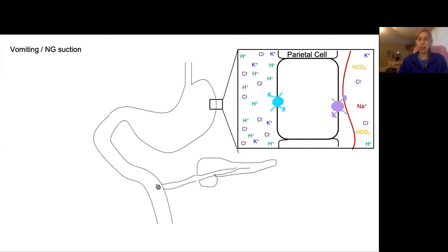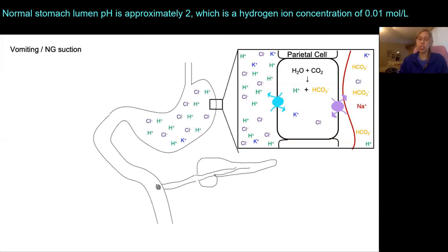So, starting off where we started the first time, in the parietal cell, we have the same reaction, carbonic anhydrase creating the hydrogen ion and the bicarbonate. The hydrogen goes into the stomach lumen and the bicarbonate goes into the blood. This creates the high level of acidity that we know is really important for digestion in the stomach.